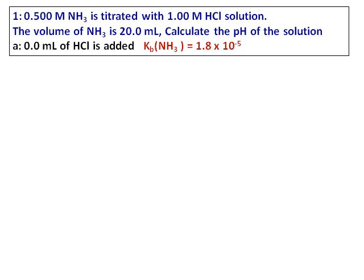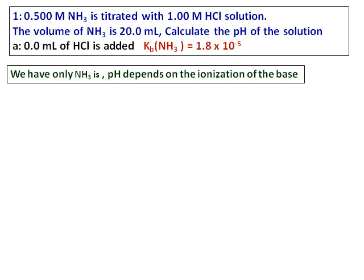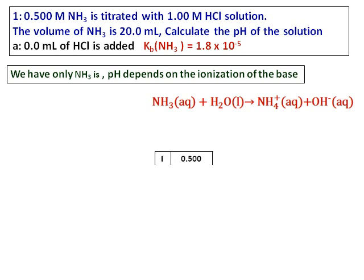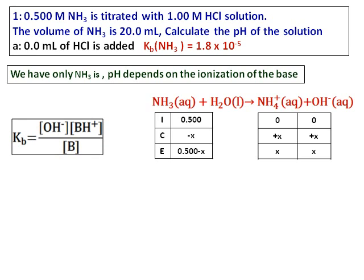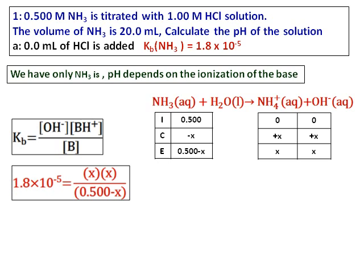The first thing we are going to do is when 0 mL of HCl is added. At this point I have only ammonia present, therefore the pH of the solution depends on the ionization of the base. Write down the ionization equation: ammonia reacts with water to give ammonium ions and OH⁻. Set up the ICE table, then use the Kb equation because we have the concentration of hydroxide ion. The Kb is given, so substitute the values.